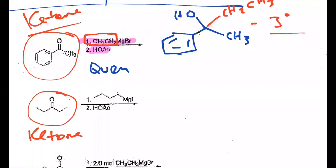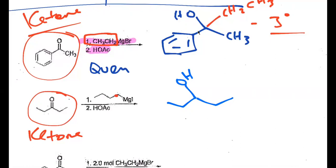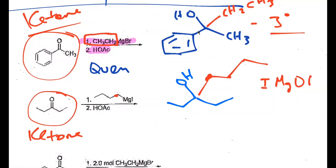That's the ketone, so my product is going to be a tertiary alcohol. If you look at what's happening, none of this other stuff is changing — I'm just adding in another substituent, which would be a four-carbon chain. I'm adding it from this carbon — a four-carbon chain.